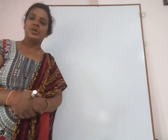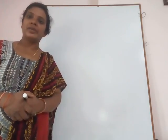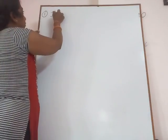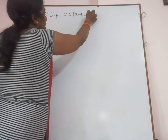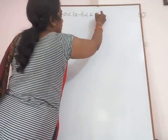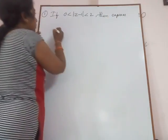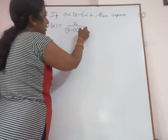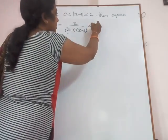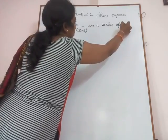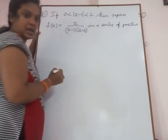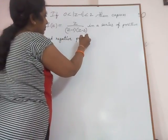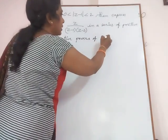Good morning friends. Now I would like to do some problems on Laurent series — how we can find out the Laurent series by giving the function of z. I am taking one problem: if 0 is less than mod(z minus 1) is less than 2, then express f(z) equal to z divided by (z minus 1)(z minus 3) in a series of positive and negative powers of z minus 1.